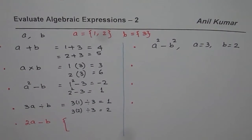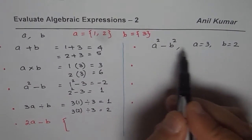and I have A equals to 3 and B equals to 2. Find the value of this expression. So you need to substitute 3 for A, 2 for B.